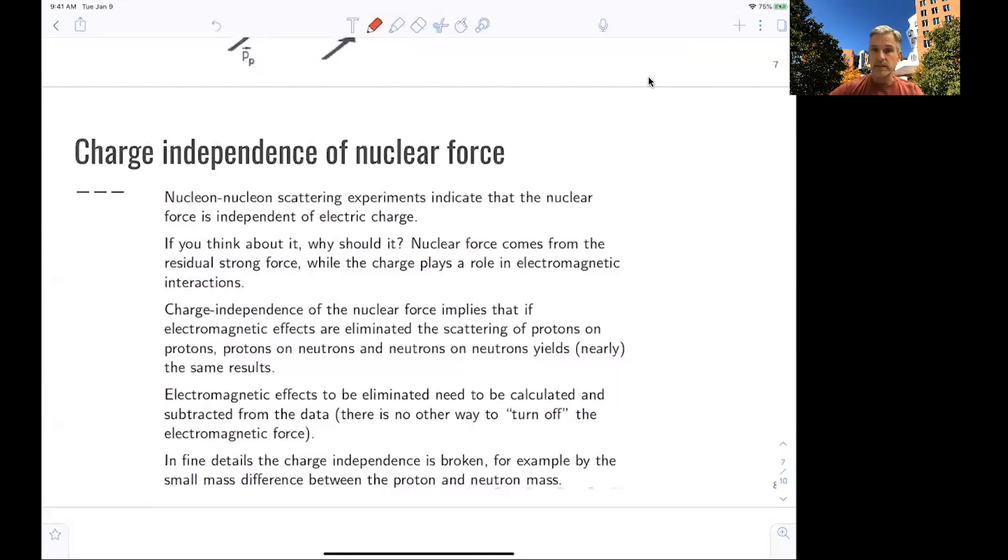The charge independence of nuclear force implies that the electromagnetic effects need to be eliminated in the scattering, meaning when you measure aspects of the nuclear force, you have to be aware of the fact that there is the electromagnetic interaction. And you have to kind of try to get them out. And that can be done by, for example, comparing scatterings of protons and protons, protons and neutrons, neutrons and neutrons.